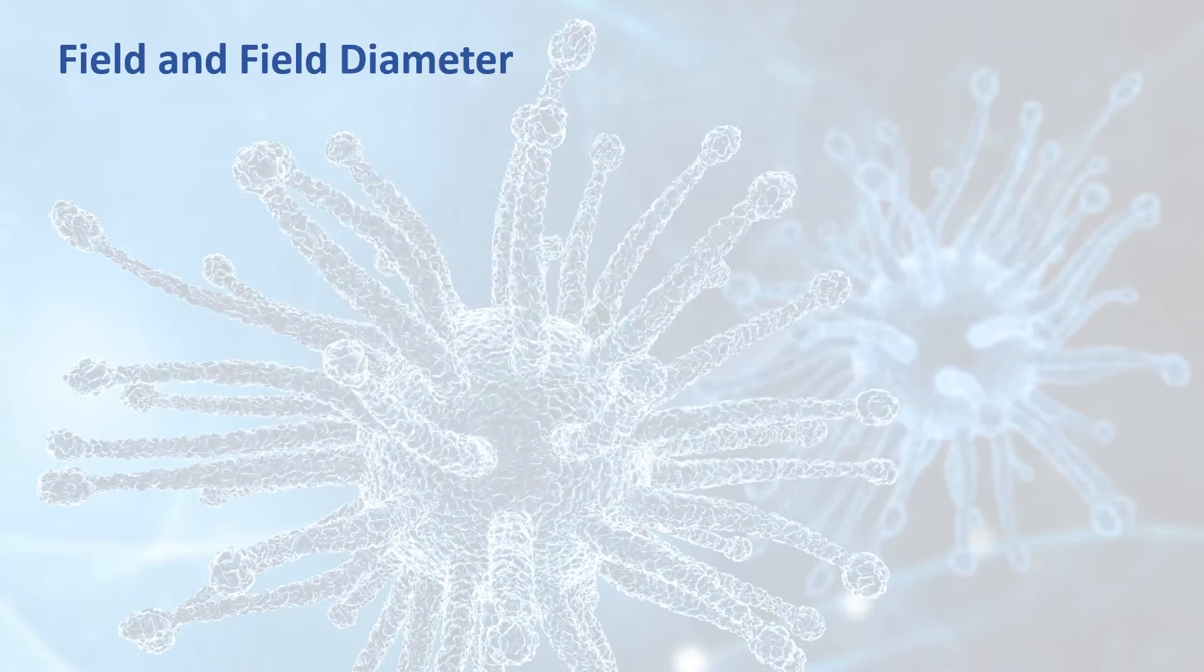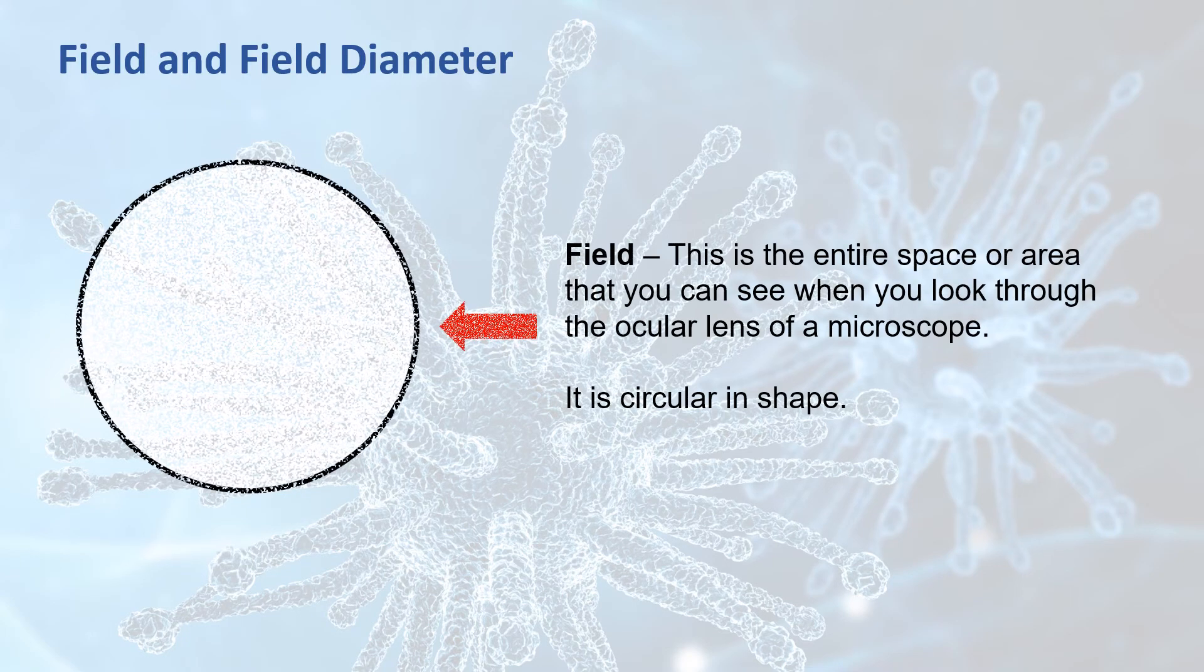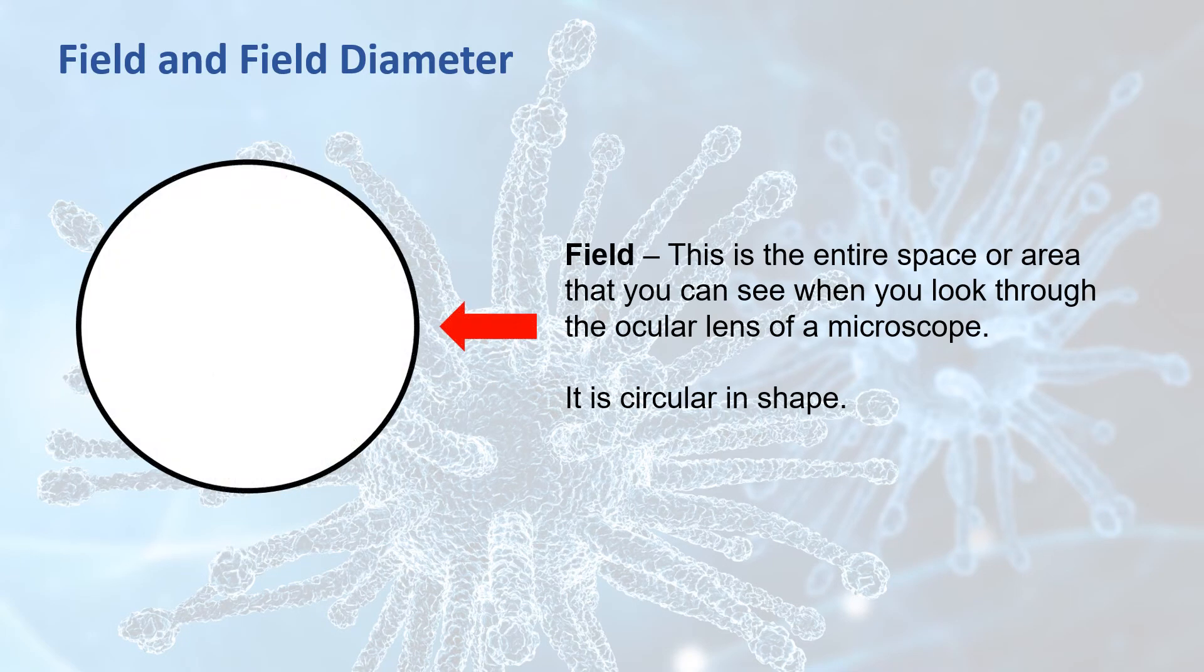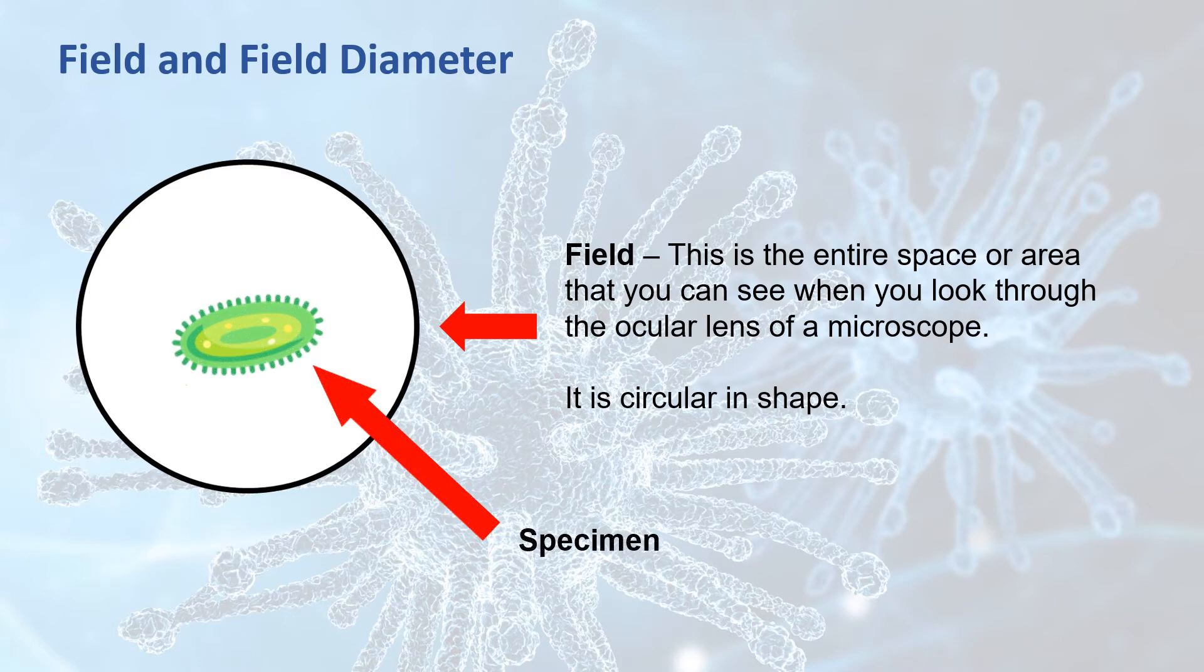A couple of other terms you need to understand before using a compound light microscope are the terms field and field diameter. The field is the space or area you see when you look through the ocular lens of a microscope. It looks like a big, lit-up circle. Your specimen, or the object you're looking at, should be somewhere in this circular area.